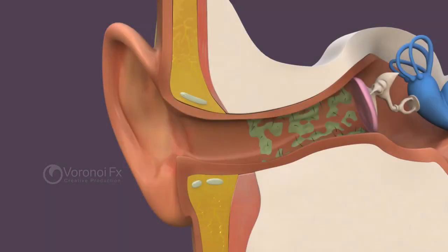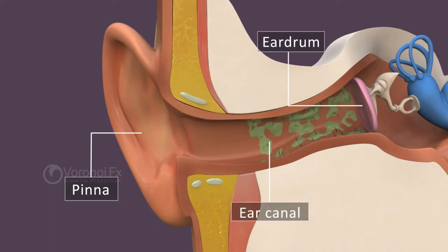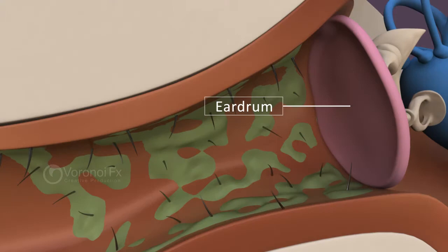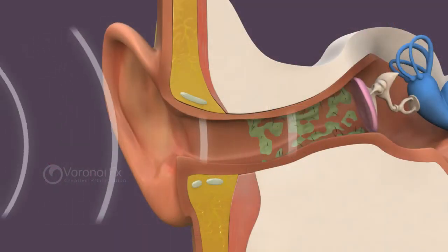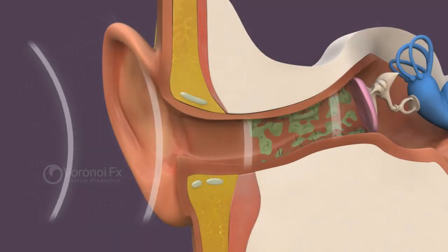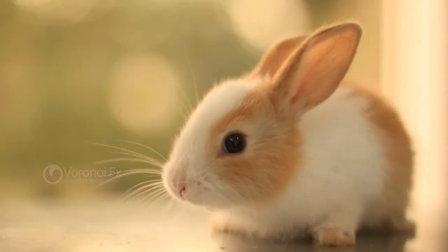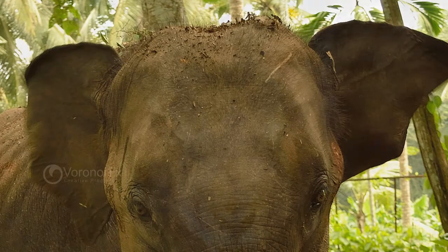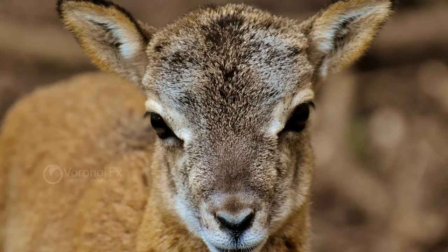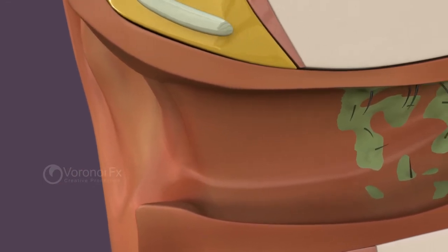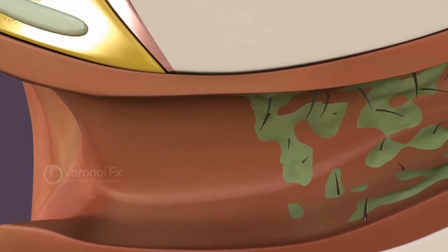The external ear includes the pinna, ear canal, and eardrum. The basic function of the outer ear, or pinna, is to protect the eardrum. The outer ear also functions to collect sound waves to the eardrum through the ear canal. Its shape will be different in different animals.